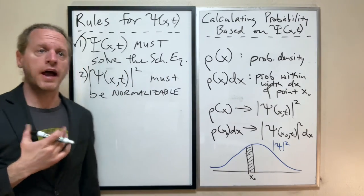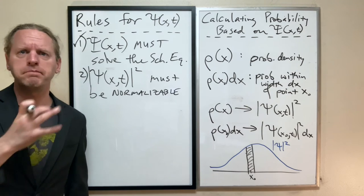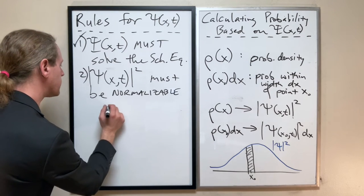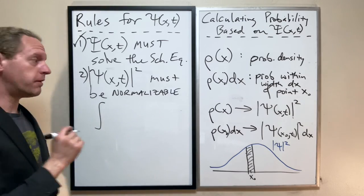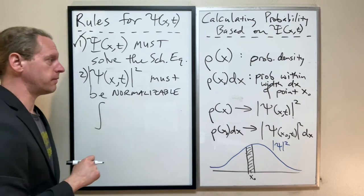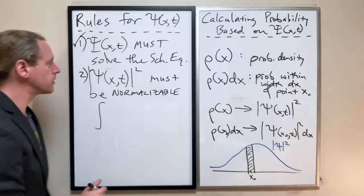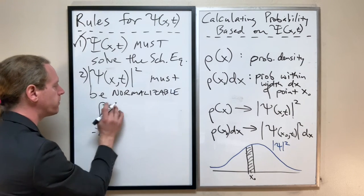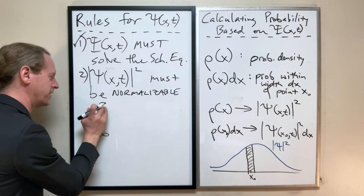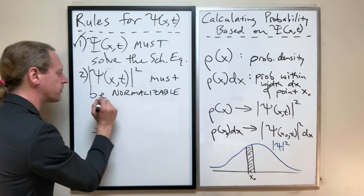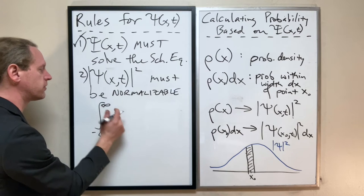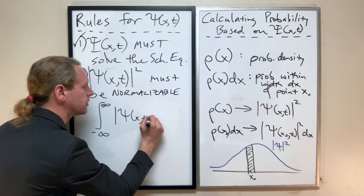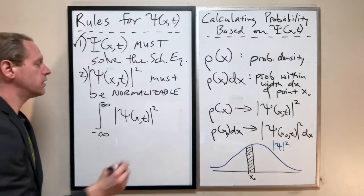So I had used this word last time, normalizable. But mathematically what that equates to is, if you take the integral of our probability distribution, which again it's psi squared, so the integral across all possible values, that's from negative to positive infinity, the integral across all possible values of x of our probability distribution psi of x, t squared dx,